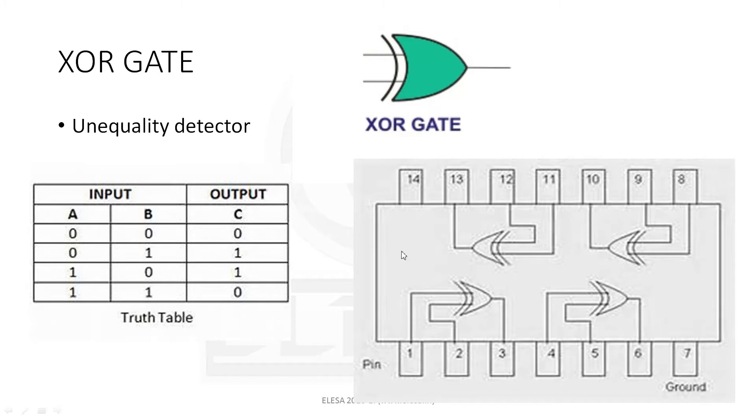One important gate is XOR gate. It is also called an unequality detector. In many applications, we use this gate. It is called unequality detector because it gives high output only when its inputs are different. Just look at this truth table. Here, the input is 0, 0, then we get output 0. Then input is 0 and 1, then output is 1. Then input is 1, 0, then output is 1. Here the inputs are different in these two conditions.